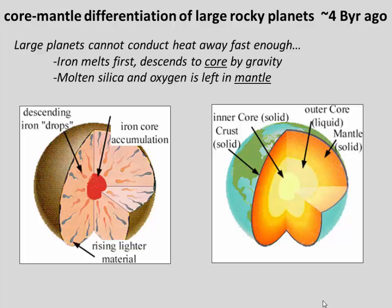That dust contained radioactive elements, and the decay of those elements caused Earth to heat up — and other planets also. For the larger planets like Earth, they were not able to conduct the heat away fast enough, so they heated up and basically experienced a nuclear meltdown. During that meltdown, iron was the material with the lowest melting temperature, so it started to melt first. Drops of iron were drawn towards the core by gravity, so this liquid iron migrated towards the core and left behind molten silica and oxygen, which would become Earth's mantle.